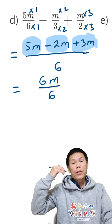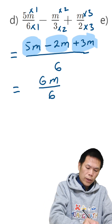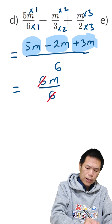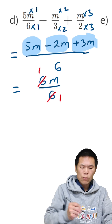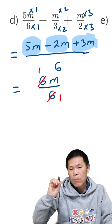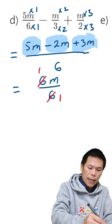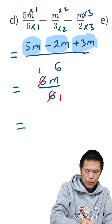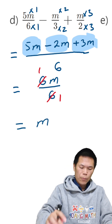But then 6 over 6 is 1, we can simplify this. 6 divided by 6 is 1, so 1 times m is m. And m over 1 is equal to m, so we just write m.